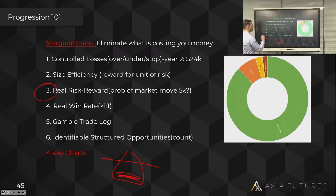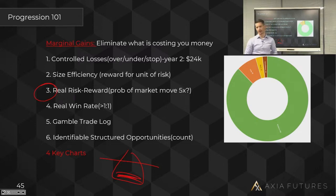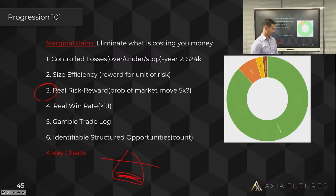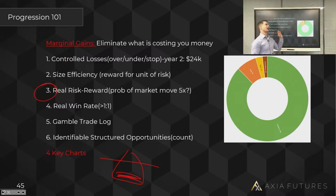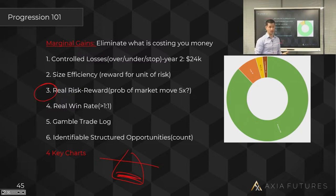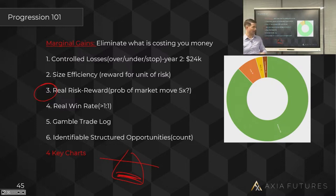My favorite one: real risk/reward. One of the biggest flaws in our industry is people throwing out sexy terms like 'my win rate is 50%' or 'my risk/reward is 5x.' It's all hocus-pocus. The reality is a good day trader will have a risk/reward somewhere around 1-to-1 or 2-to-1 on average over a career. Real risk/reward is not what your strategy hypothetically can pay out — it's not 'if I run it to this target I'll make 4x.' Real risk/reward is how much reward you're actually making versus how much you're actually losing.